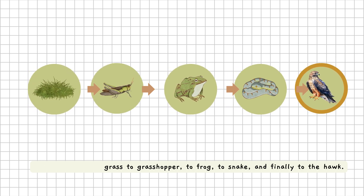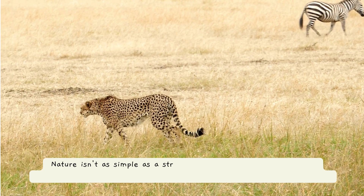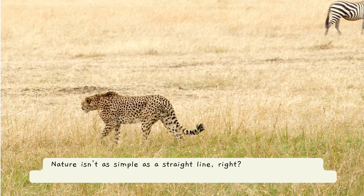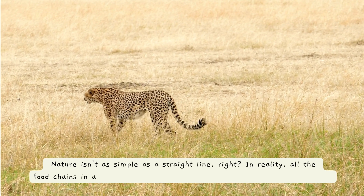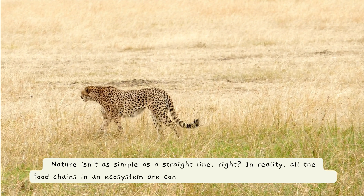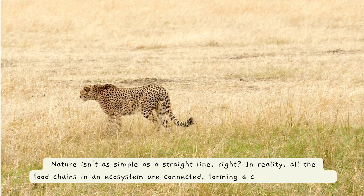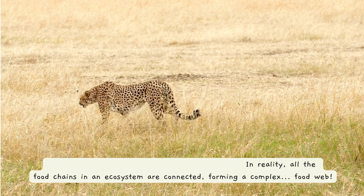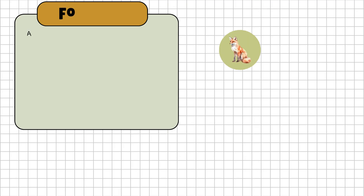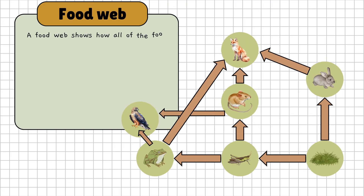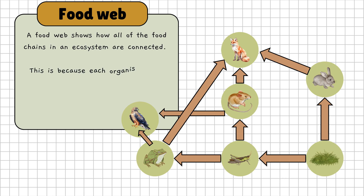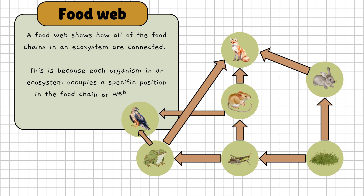But wait — nature isn't as simple as a straight line, right? In reality, all the food chains in an ecosystem are connected, forming a complex food web. A food web shows how different food chains interact and overlap. Each organism occupies a specific place in the food chain, called a trophic level, but it often plays more than one role in the food web.